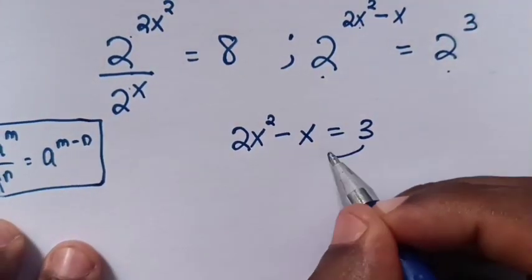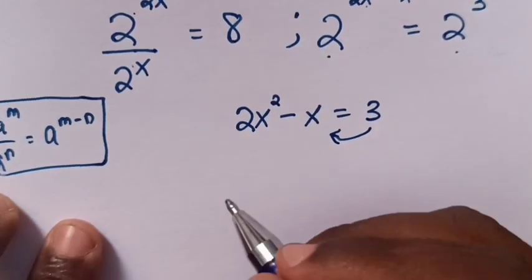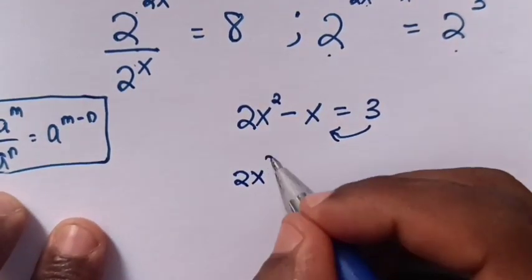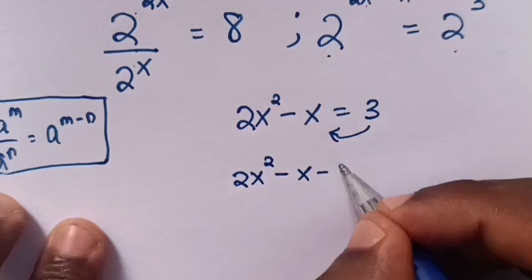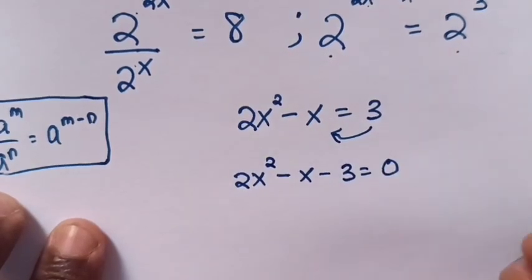Now this we take to the left side, so the equation will be 2x squared minus x minus 3 equals 0.